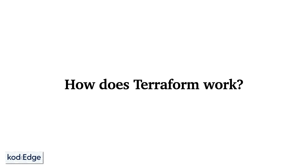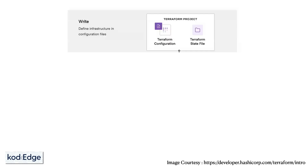The core Terraform workflow consists of three stages. The first stage is the write stage — you define resources using HCL in the configuration file, which may span multiple cloud providers and services. For example, you might create a configuration to deploy an application on an Amazon EC2 instance in a VPC network with a security group and load balancer.